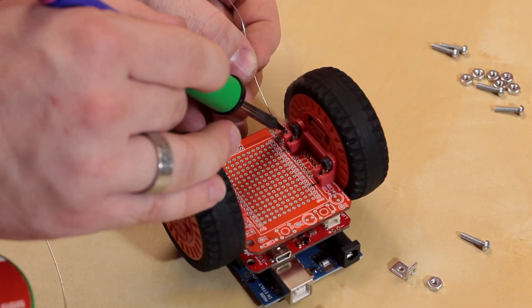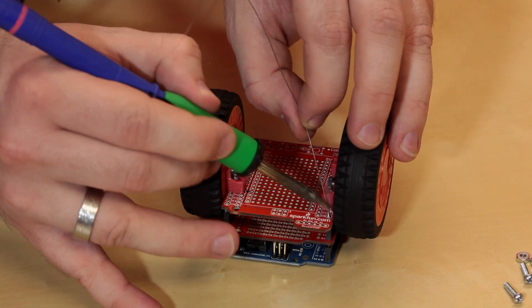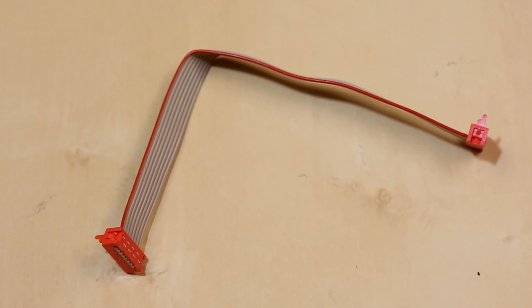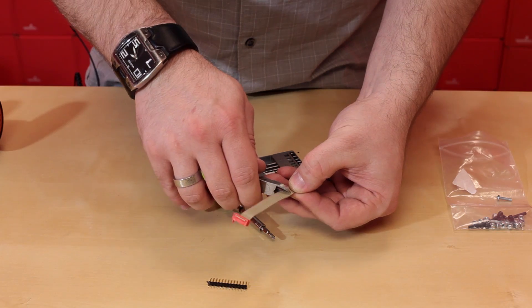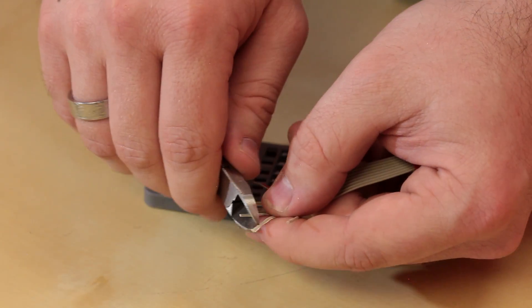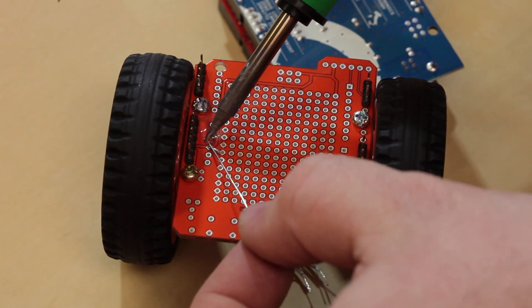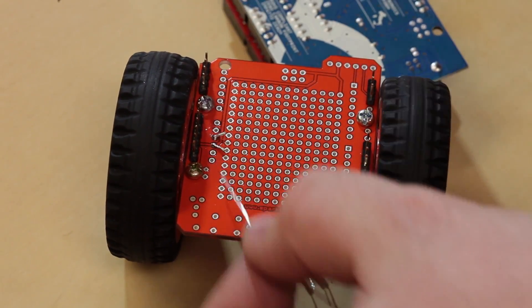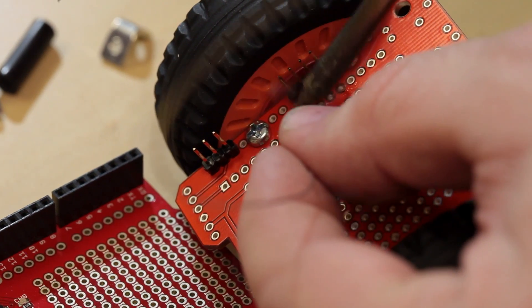And next we're going to go ahead and solder headers to the proto shield, and that way we can connect it to the Arduino. Next I'm going to take the ribbon cable that fits to the hubby wheels and just cut it directly in half, and that'll give me two pigtails so that I can wire each of the wheels up. Now I'm going to take those ribbon connectors and I'm going to go ahead and solder them to the proto board. I have to make sure that each one is soldered to the correct pin on the Arduino.